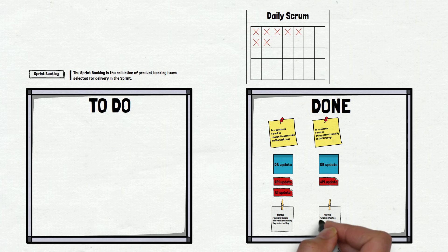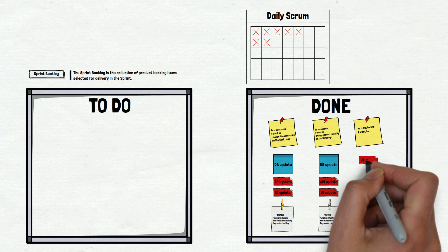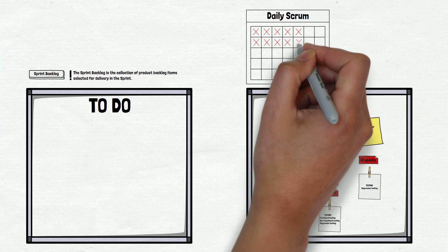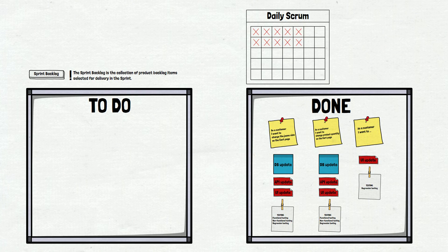That is what the daily routine looks like. Item after item, the team develops, designs, plans, fixes bugs, updates the DB, etc. In our case, it is a successful scenario and at the end of the sprint the team finished all items — all of them are ready to be delivered. All items are on the done board. So, what happens next? Let's go to the next item in our schema.